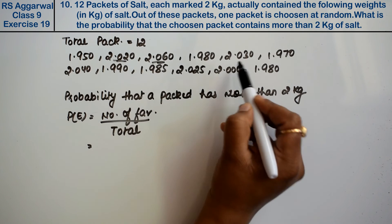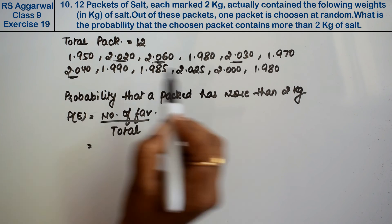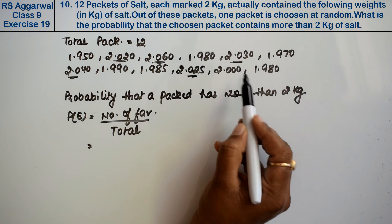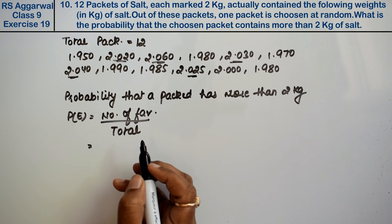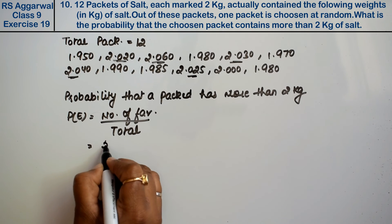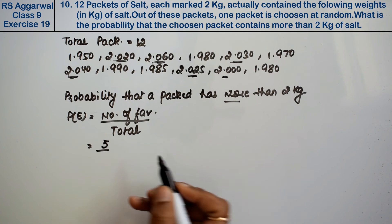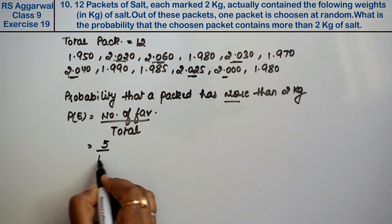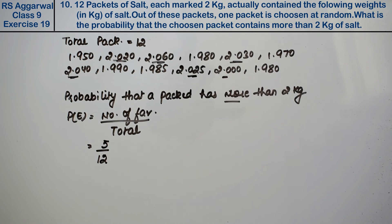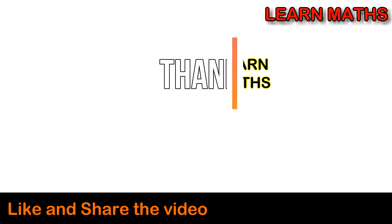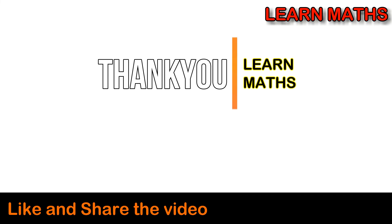Counting: 1, 2, 3, 4, 5. So there are 5 packets with more than 2 kg out of total 12 packets. So the answer is 5/12. Thank you. If you understood the step-by-step solution of this video, please subscribe to my channel and share it with your friends.